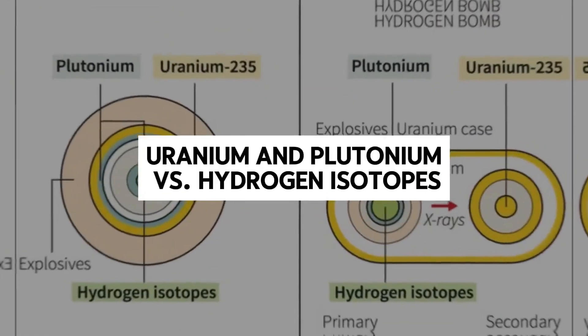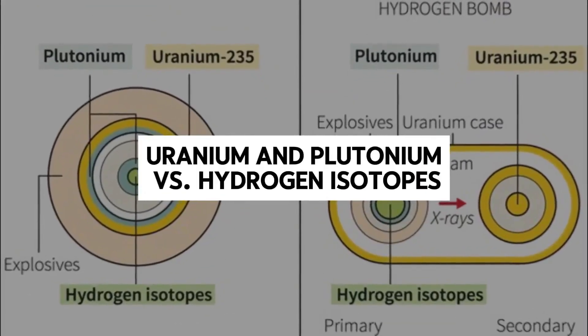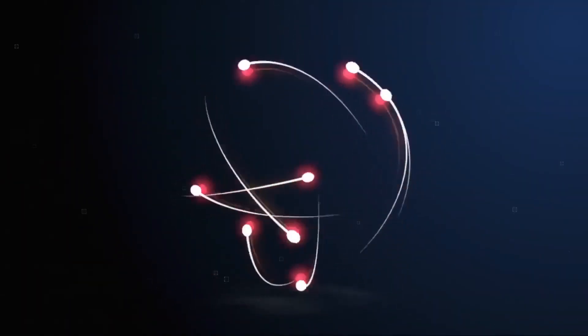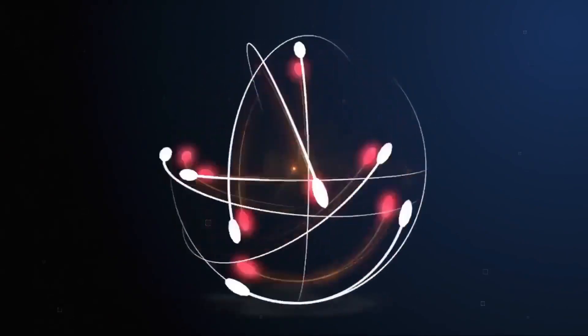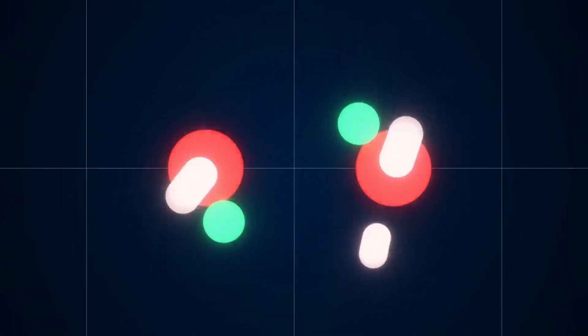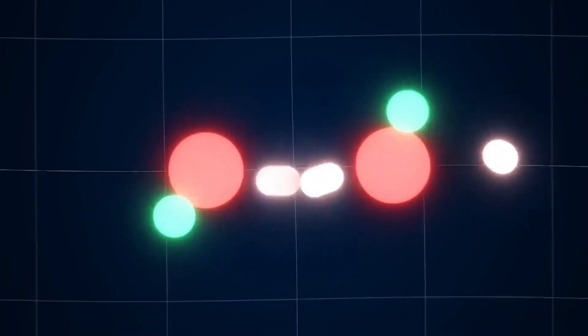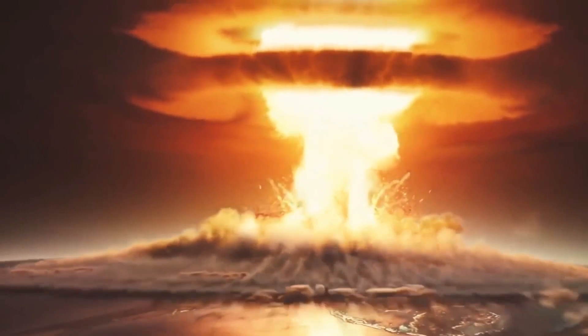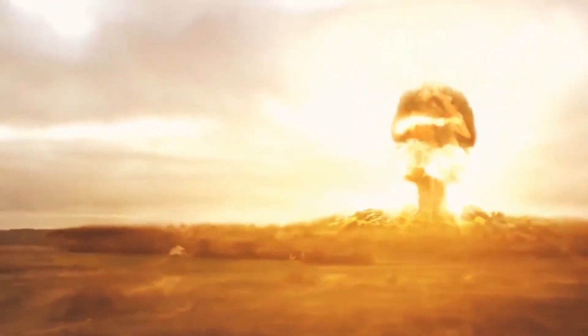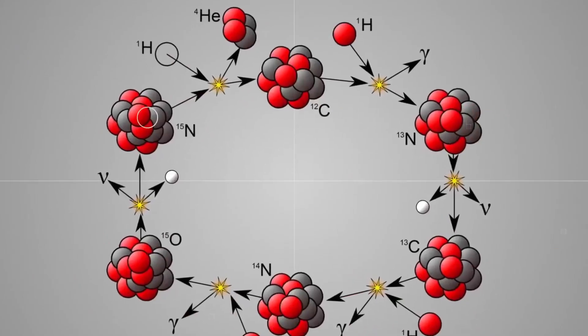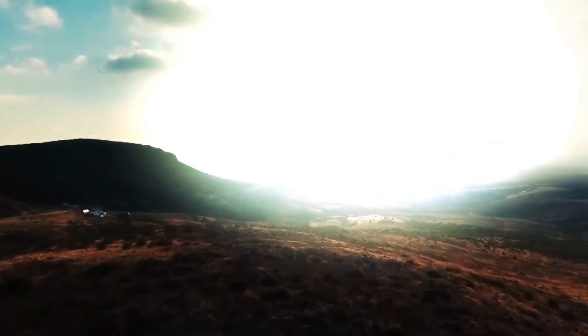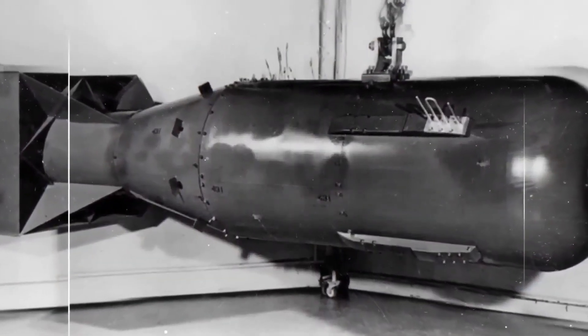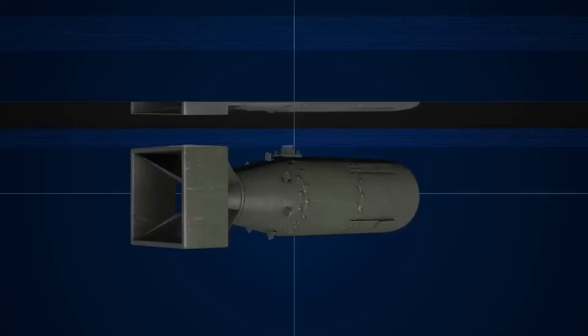The fuel used in atomic bombs consists of fissile materials such as uranium-235 or plutonium-239. These isotopes undergo nuclear fission when bombarded with neutrons, releasing large amounts of energy in the form of heat, light, and radiation. The critical mass required for a sustained chain reaction is achieved by compressing the fissile material through implosion or gun-type mechanisms, initiating the explosive yield of the bomb.